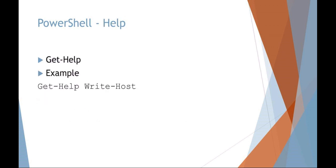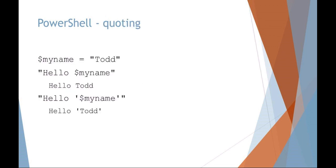Get-Help is a great tool in PowerShell. If you want more information on Write-Host and all its options, you can say Get-Help Write-Host and that'll give you lots of good examples. Here's an example of setting a variable: if I say MyName equals 'Todd,' I could then do Write-Host 'Hello' and include the variable. You can use single quotes within double quotes to display those single quotes. PowerShell is very liberal in its syntax.